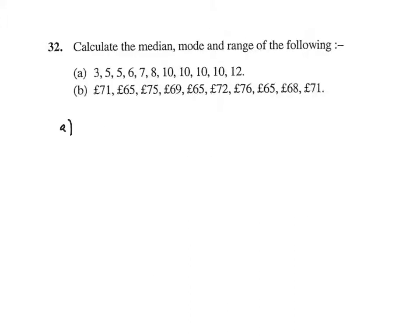Part A. The data is already ordered for us. The mode is the one that occurs most often, and that's 10. There are 4 tens. The range is the highest take away the lowest. The median is the middle number. So there are many pieces of data. We've got 1, 2, 3, 4, 5, 6, 7, 8, 9, 10, 11. 11 plus 1 is 12, divided by 2 is 6. So 1, 2, 3, 4, 5, 6 - this is the middle number. We must have the same number above. That's 5 numbers above and 5 numbers below. So the median then is 8.